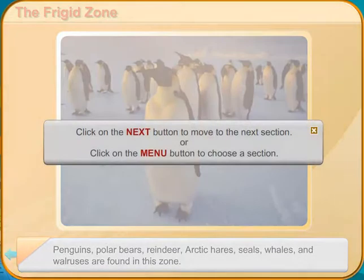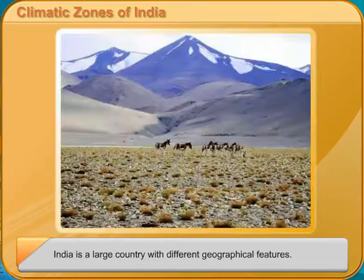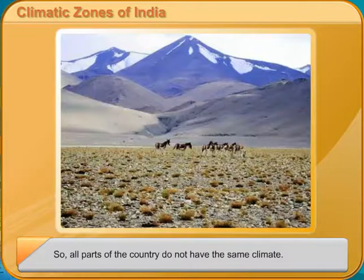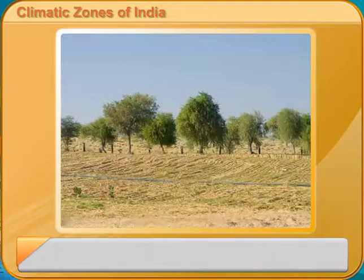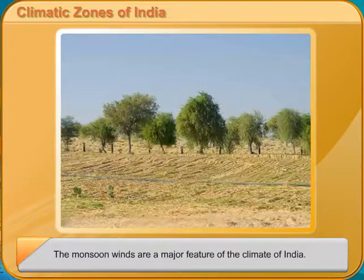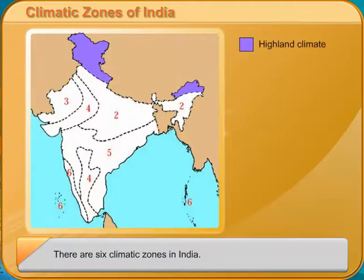Highland climate. This climate can be found in the high-altitude regions of India. This zone has cool summers, little monsoon rains, and very cold winters. Jammu and Kashmir and Himachal Pradesh are in this zone.